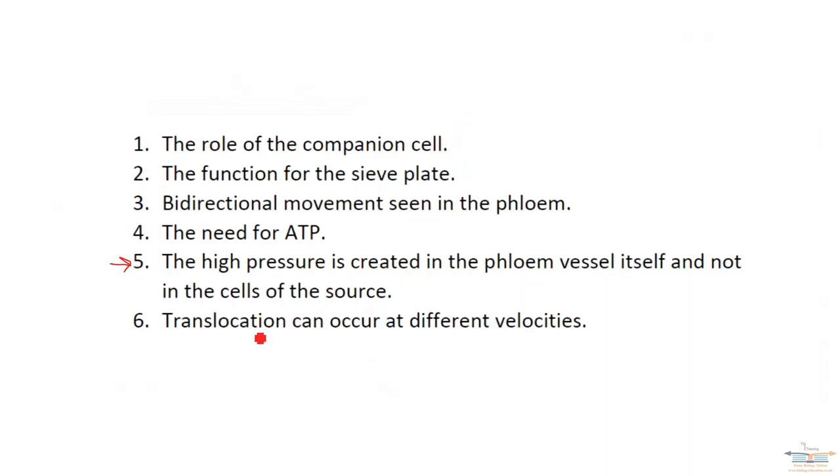And the last one there, translocation occurs at different velocities. But the mass flow hypothesis, because you've got this pressure gradient created, movement is of a uniform velocity. But that's not what is known about the phloem.